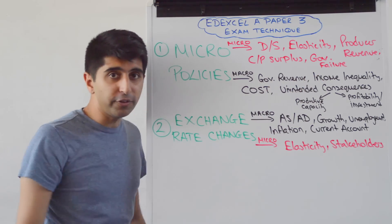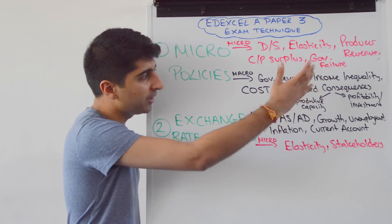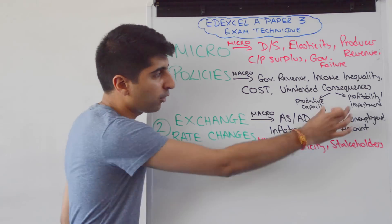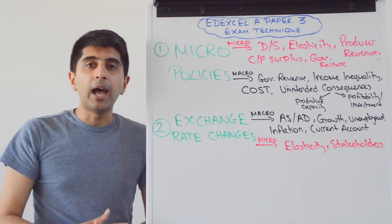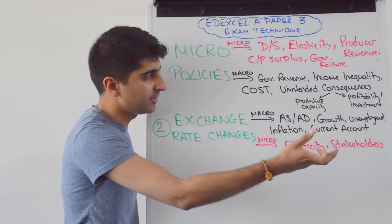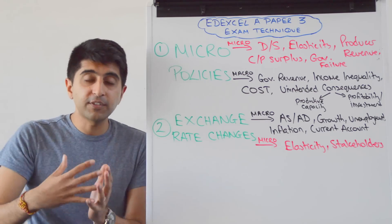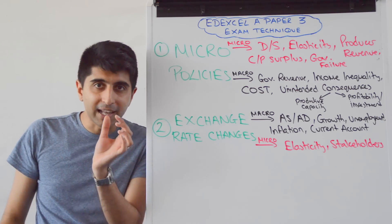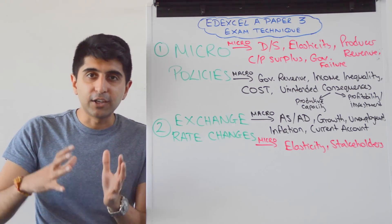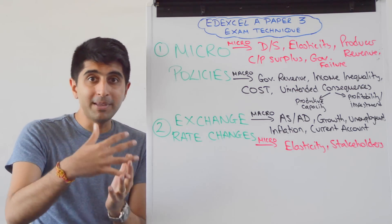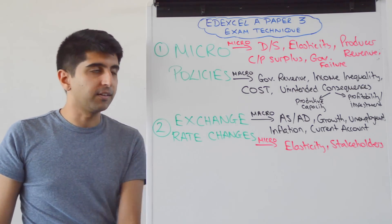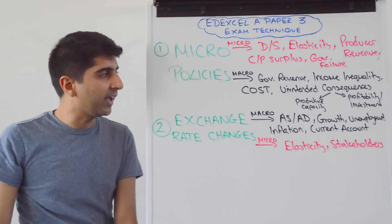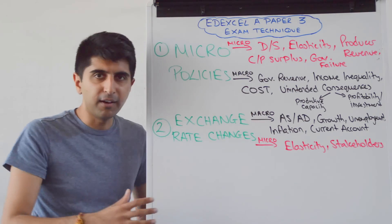Even the unintended consequences could actually be macro-effects. For example, if excessive regulation — a micro-policy — burdens firms so much that profitability takes a hit, maybe investment will be lessened as a result. The productive capacity of the economy will be restricted going forward. If these firms end up leaving the country because regulation is that tight, it could be a hit to productive capacity, and it could mean less FDI coming in. So look for unintended consequences but in terms of a macro-effect.